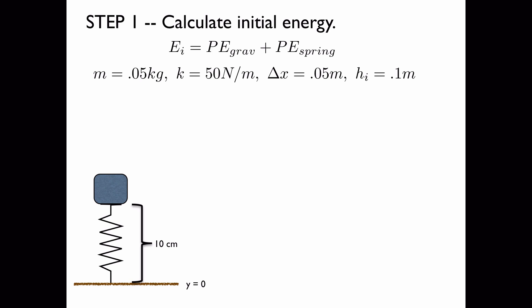So now these are the known quantities in the problem. We have the mass, the spring constant, delta x here is the initial compression of the spring, which was said to be 5 centimeters or 0.05 meters, and the initial height above the ground, which from the diagram can be seen to be 10 centimeters or 0.1 meters.